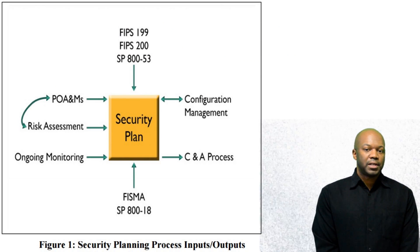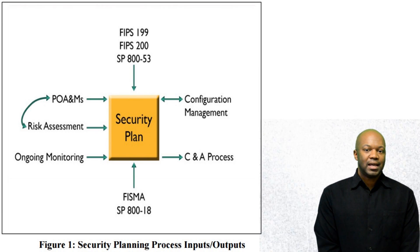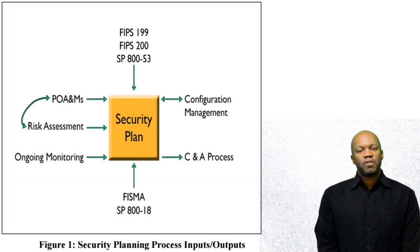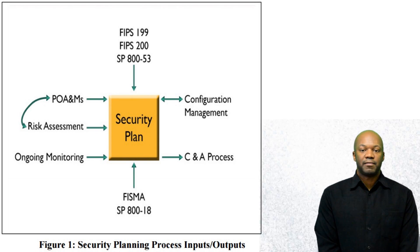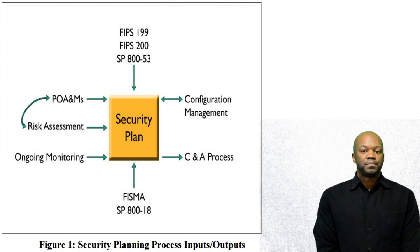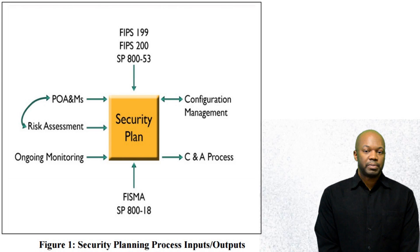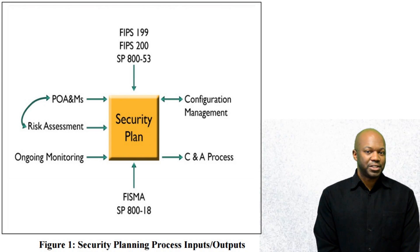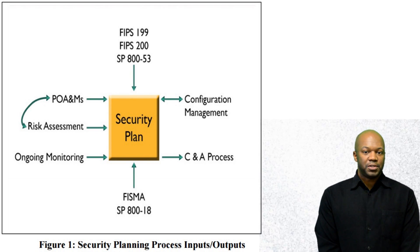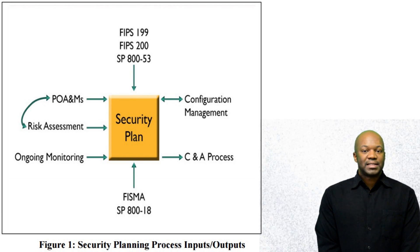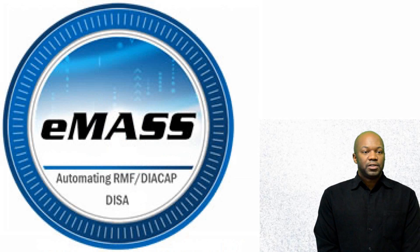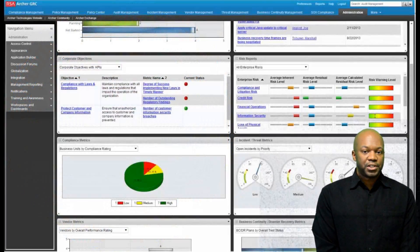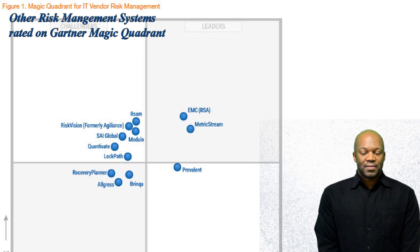The system security plan comes from NIST SP 800-18. If you want to know more about how it's all broken down and what should go into a typical system security plan, you can go to 800-18 and that'll tell you everything you need to know in pretty good detail. Lately, SSP formats have been going mostly digital — meaning it's basically a database where you add all the information you need, and then the database generates a PDF. You'll see that in EMAS, RISC Archer, and many other formats out there.